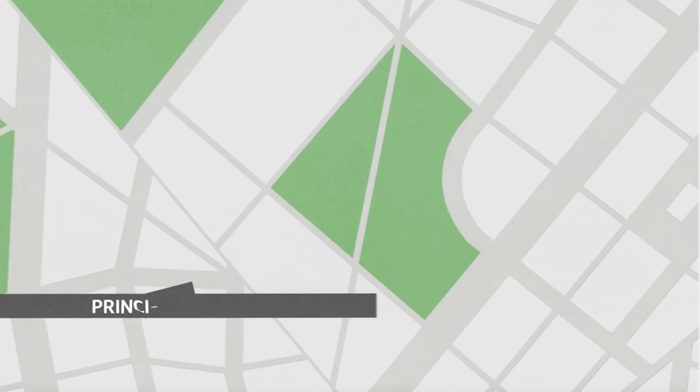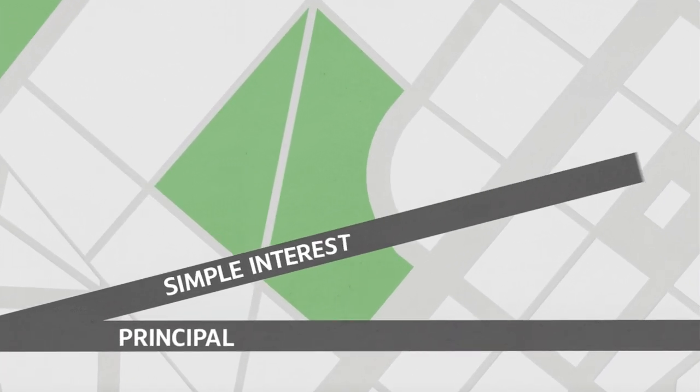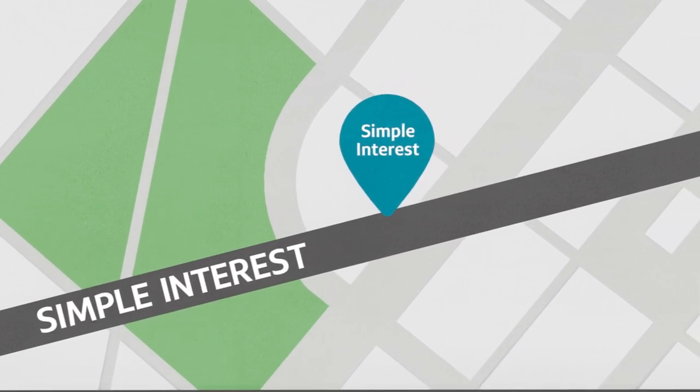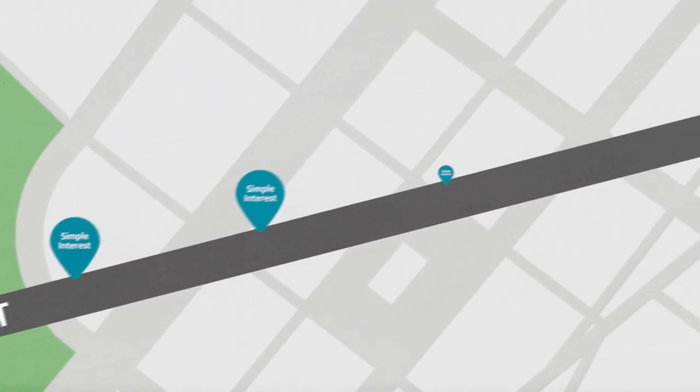Simple interest is a steady climb. It's calculated as a percentage of the principal, the amount borrowed or deposited over a certain time period. The percentage doesn't change and is always calculated on the original amount.